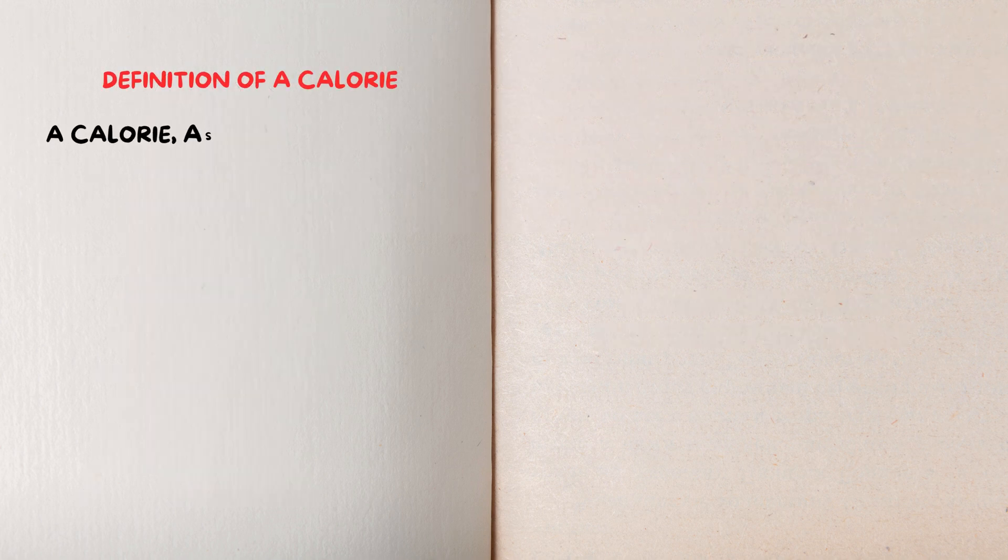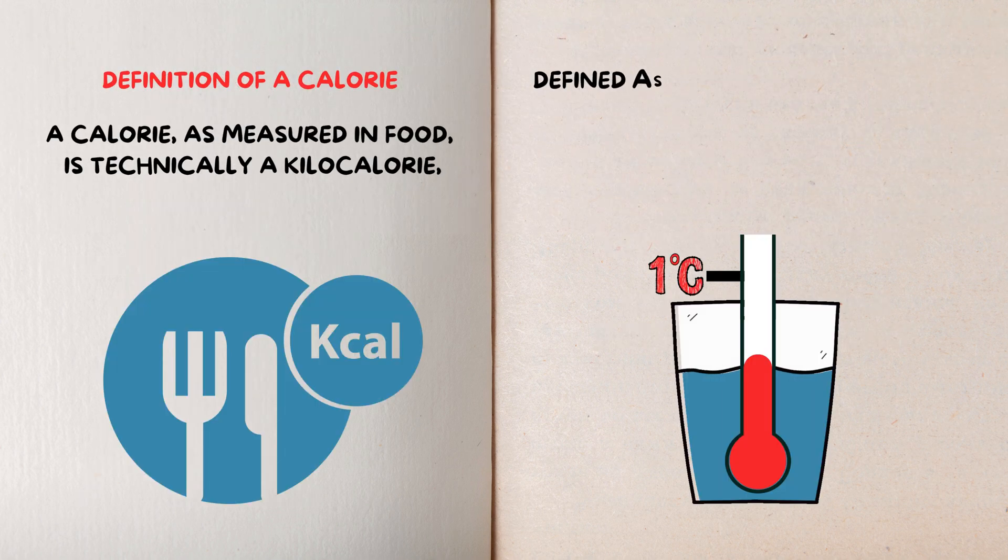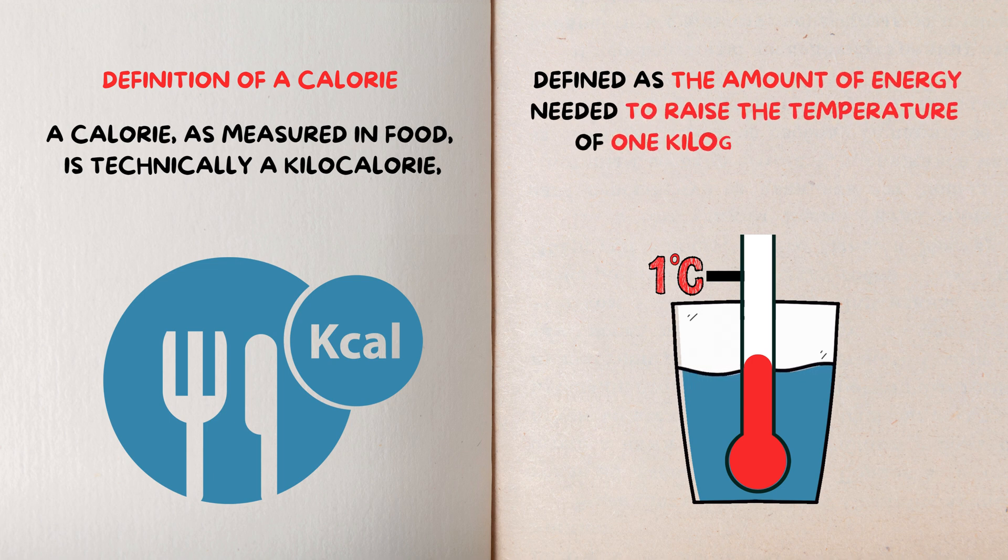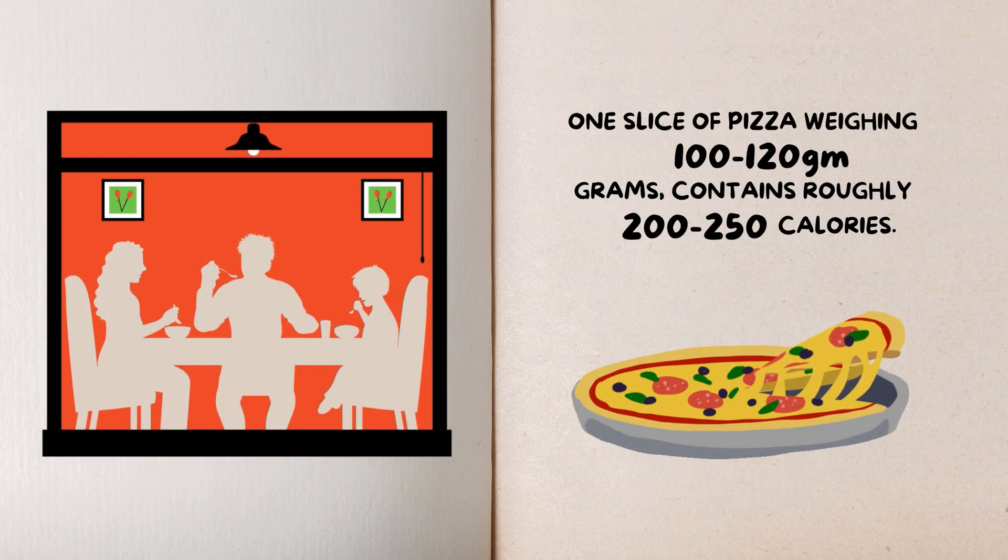A calorie, as measured in food, is technically a kilocalorie defined as the amount of energy needed to raise the temperature of one kilogram of water by one degree Celsius. Everything we eat contains a certain number of calories representing the energy stored in its chemical bonds.